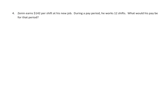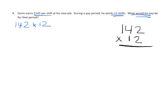In this problem, Zenon earns $142 per shift at his new job. During a pay period he works 12 shifts. So we've got $142 per shift, he works 12 shifts — what is his pay? This is definitely a multiplication problem: 142 times 12. We're going to start with the visual model and then relate it to the standard algorithm.